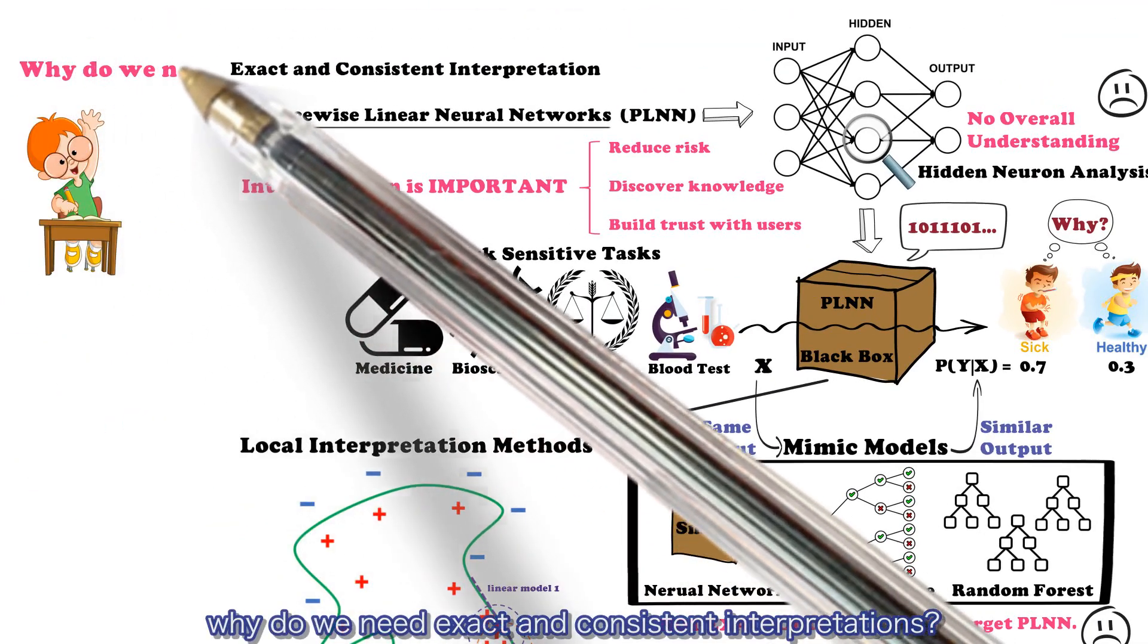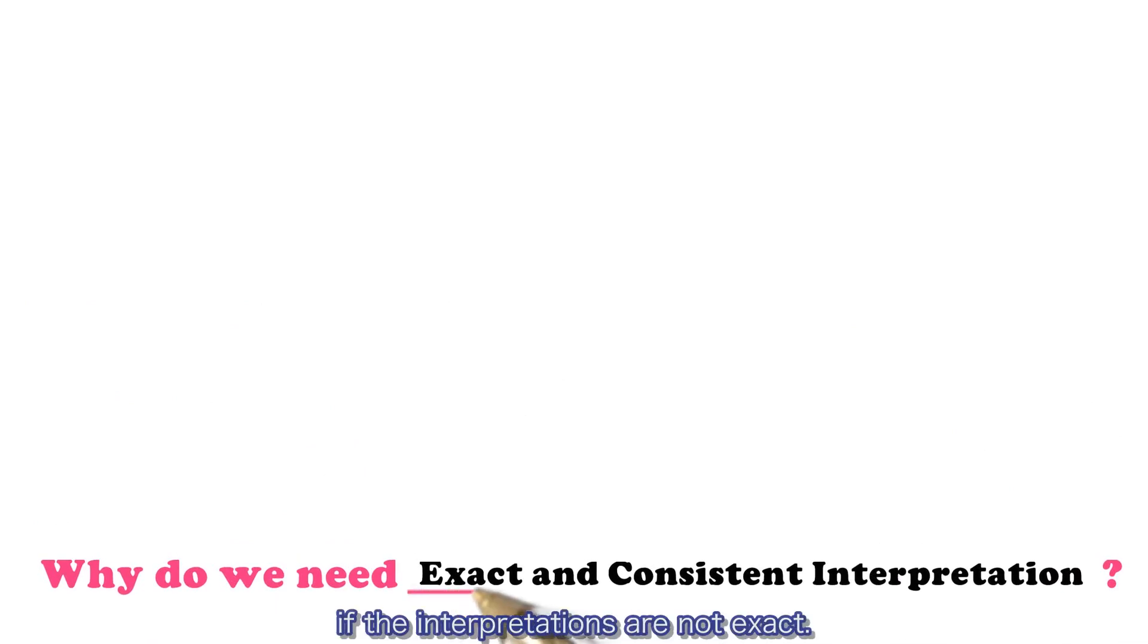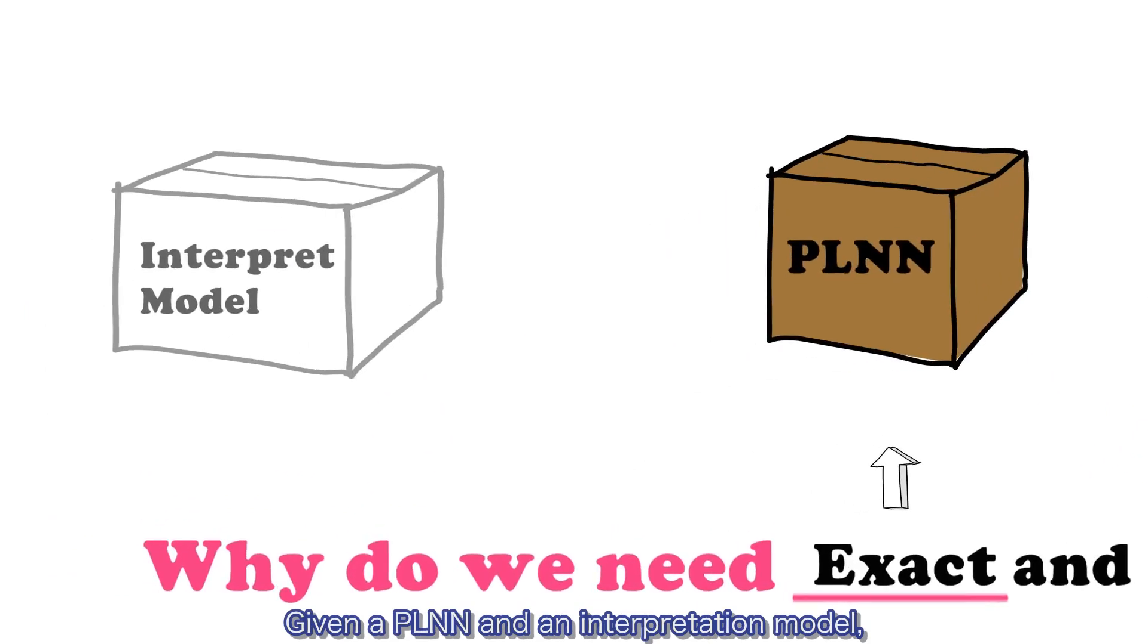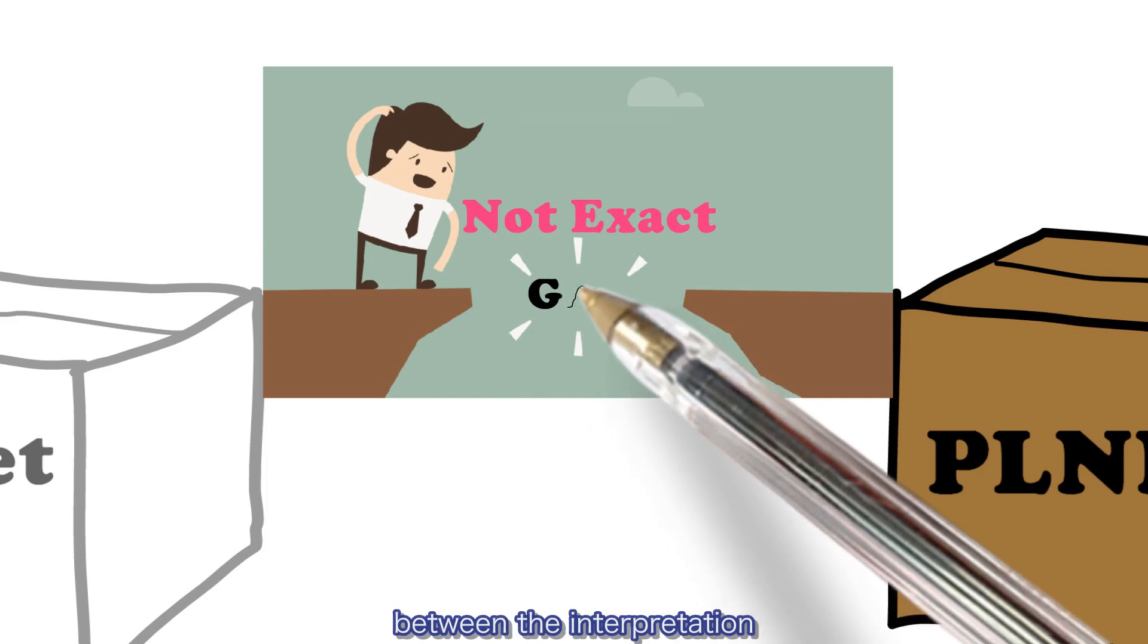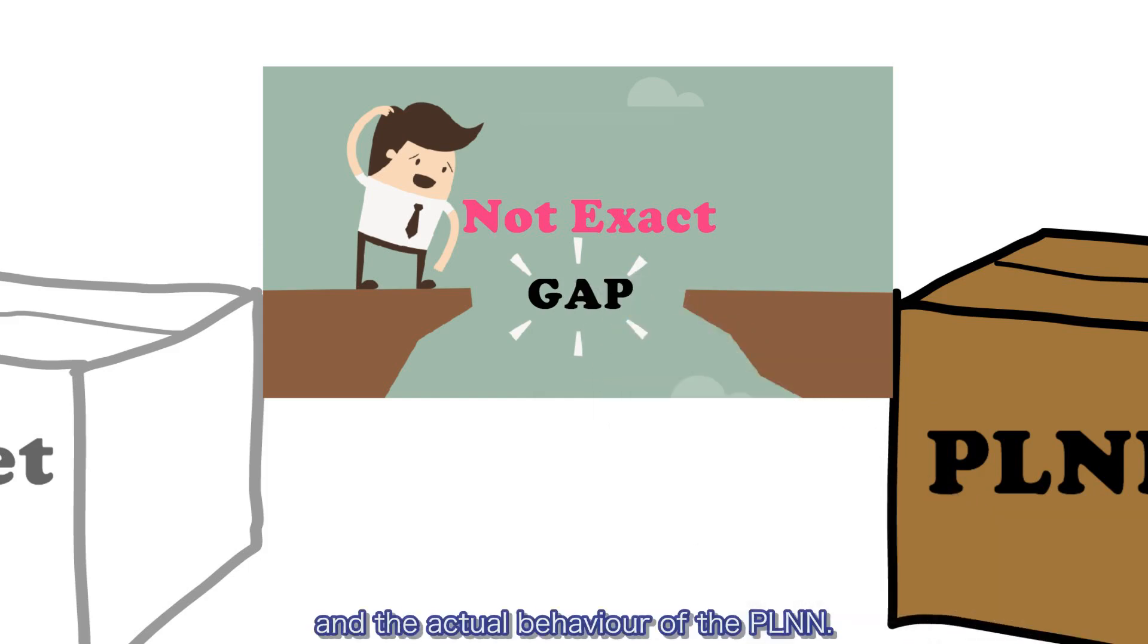You may wonder, why do we need exact and consistent interpretations? First, let's see what happens if the interpretations are not exact. Given the PLNN and the interpretation model, since the interpretation is not exact, there is always a gap between the interpretation and the actual behavior of the PLNN.